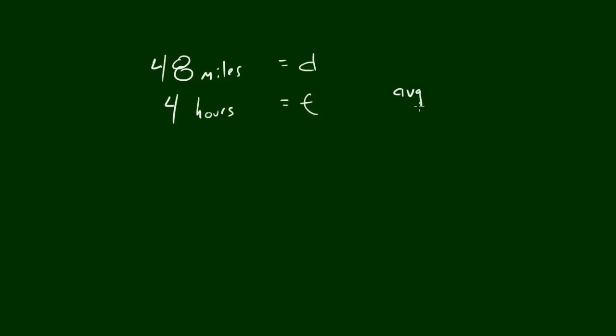If you remember, the formula for average speed equals the distance over time. So we're trying to solve for speed, and we already got 48, which is the distance, over four hours.